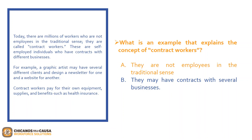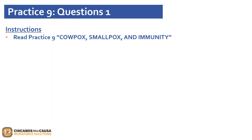All right, moving on to the home stretch — Practice 9. Please pause the video and read Practice 9: Cow Pots, Small Pots, and Immunity. When you're ready to begin, click play.